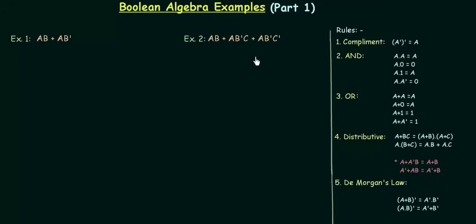The rules I have written on the right-hand side of the screen so that we can use them directly while solving our examples. The first example is AB + AB'. We have to minimize it using this set of rules. So let's start the solution.